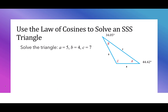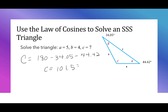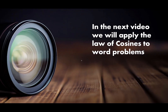Now that we have the value of B, we can find the value of C by taking 180 and subtracting 34.05 minus 44.42. This says C is 101.53 degrees. In the next video, we will apply the law of cosines to word problems.